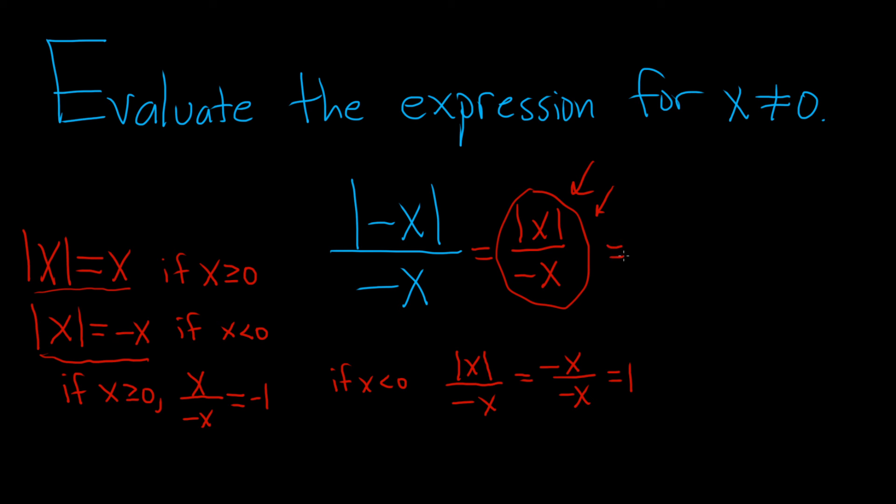And so now we can write our final answer as a piecewise function. It's going to be two pieces. The first piece will be negative 1, and that will be true if x is greater than or equal to 0. And the bottom piece is 1, and that will be true if x is less than 0. And this is the final answer.